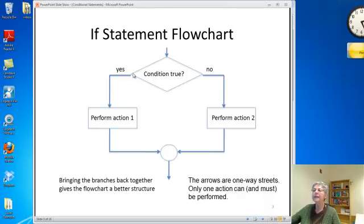The important thing is that these arrows are one-way streets. Only one of these two actions can and must be executed, depending on whether the condition is true or false.